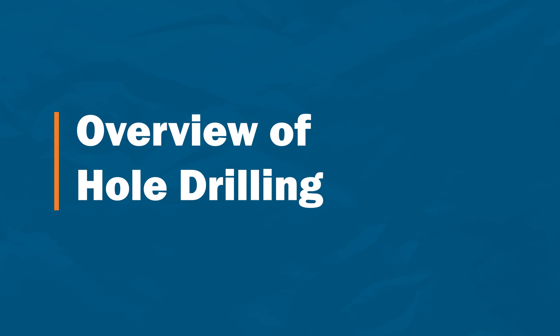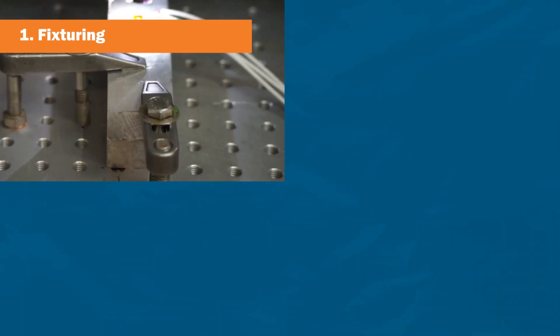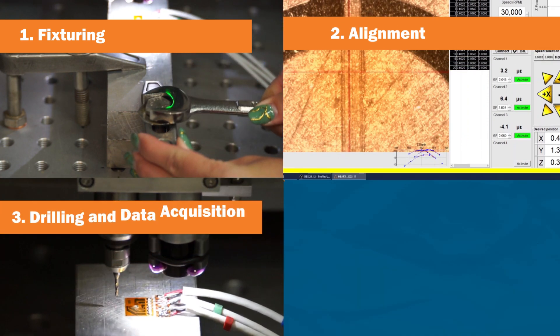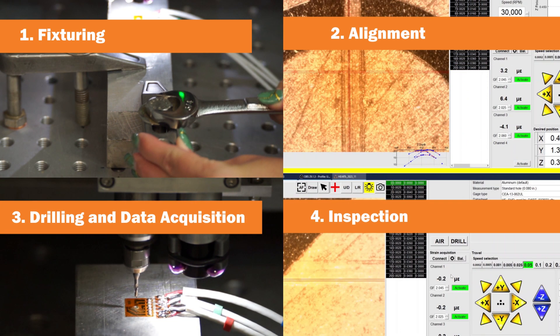There are four basic steps to perform a hole drilling measurement: fixturing, alignment, drilling and strain acquisition, and inspection.